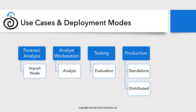In a distributed environment, we refer to it as a Security Onion grid made up of multiple nodes. Different components are installed on different nodes that are part of your Security Onion grid. This is what we recommend for production use. Standalone should only be used in limited environments where you won't have a lot of traffic to work with.